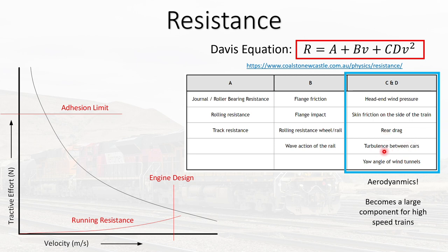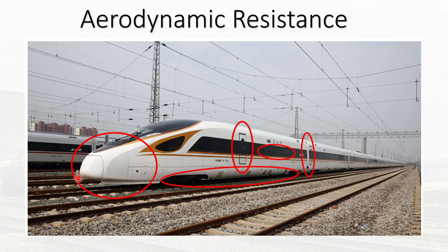The third component's factors are rear drag, turbulence between the cars — basically all aerodynamic-related factors. That's why for high-speed trains, aerodynamics become very critical. Looking at aerodynamic design strategies: the nose is clearly aerodynamically shaped, the doors are flush, the inter-car gaps are filled to prevent turbulence, the windows are flush, and the train base is covered to reduce under-car drag.